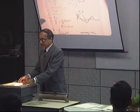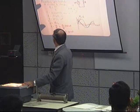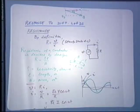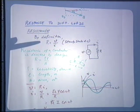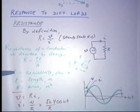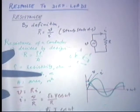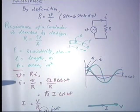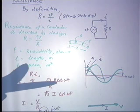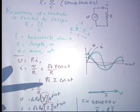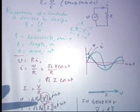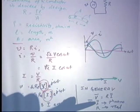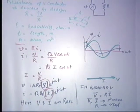To recap: resistance is V/I, decided by design as ρL/A. We have V = R·i and i = V/R = (root 2 / R)·V·cos(ωt). Then i = root 2·I·cos(ωt). V phasor and I phasor are in the same direction — V = R·i applies to phasors, and V can be in any direction with I following it.